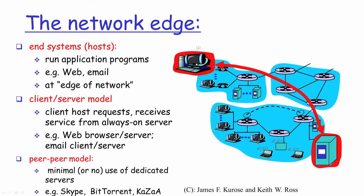The end systems comprising the network edge run the application programs — which could be a web program or an email program — typically at the edge of the network. We call this the network edge because, considering the entire network topology, you will find host end systems running only at the edge, not in the middle. Whether it's a client or a server, these are always found at the edge of the network.